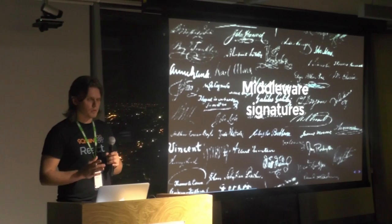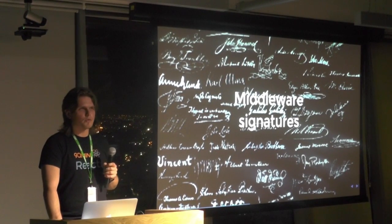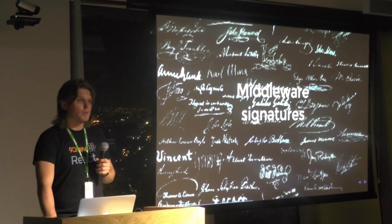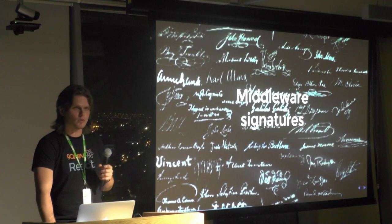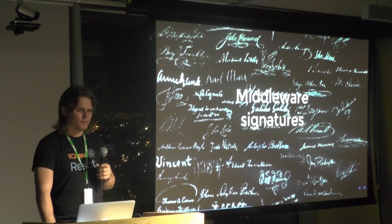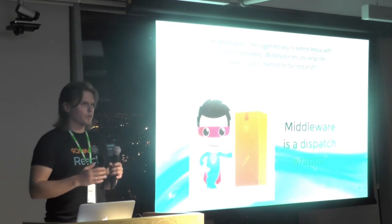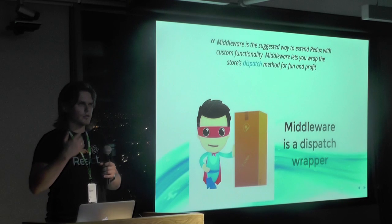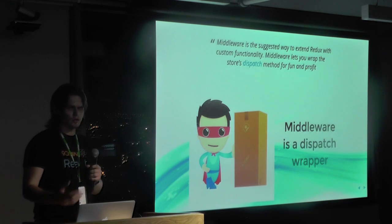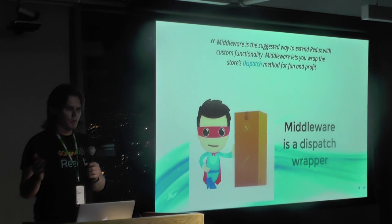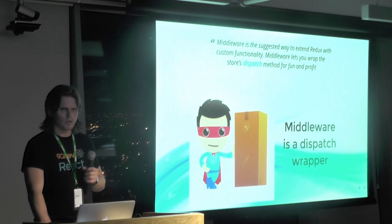All this is pretty nice, but what if you need custom functionality — like fetching from the server inside an action creator — when an action creator is basically a function that returns a simple object? For this and other cases we have middlewares. Middleware in Redux is basically a wrapper around the dispatch. When an action is dispatched it goes through a middleware chain until it passes through all the middlewares, and each middleware can add its custom functionality to the dispatch.